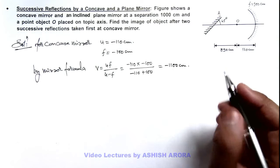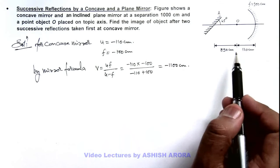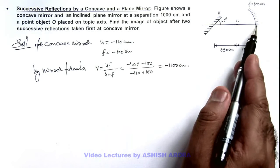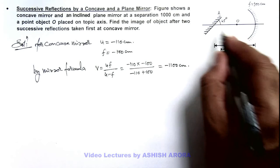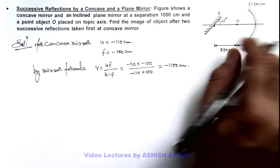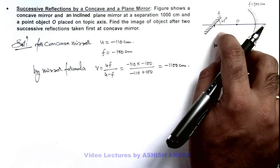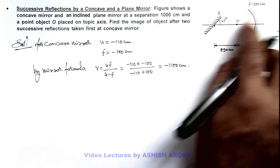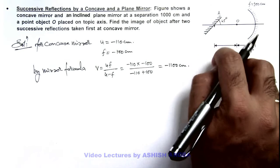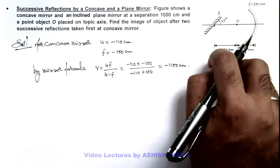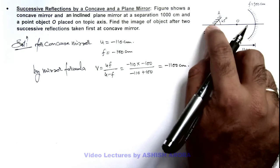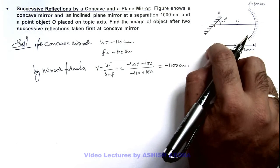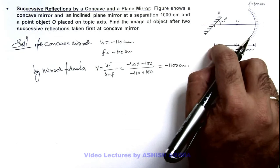So image is produced at a distance eleven hundred centimeter to the left of this mirror. So in this situation as at thousand centimeter the mirror is placed at 45 degree, the light rays which will fall on this mirror will be reflected at 90 degree and going in downward direction. So here we can say final image is formed below this plane mirror at a distance hundred centimeter.